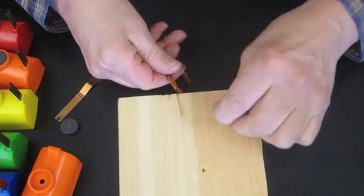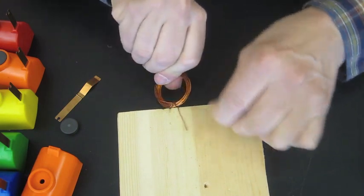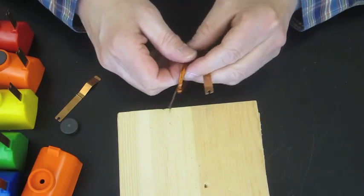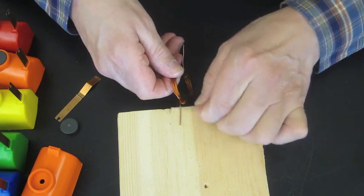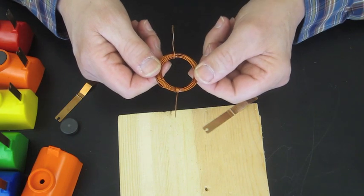You can use one of the supports to scrape all the enamel off of the one side of the wire. On this side, you're just going to scrape the top half and leave the enamel on the bottom half. And then the coil is ready to go.